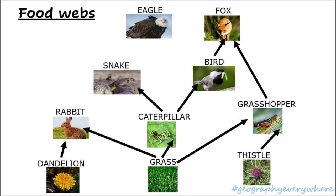The snake eats the caterpillar. The fox, apart from eating the bird, can also eat grasshoppers. The eagle eats the rabbit and the snake, and the snake eats the rabbit and the caterpillar. Now we can see that there are many food chains — even though we started with one, now we can see many food chains meshing into one another.